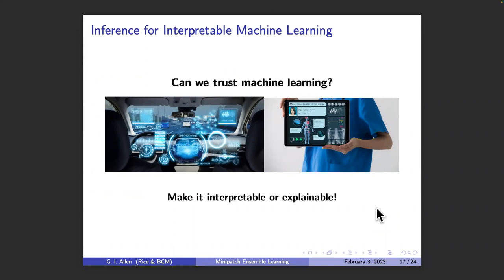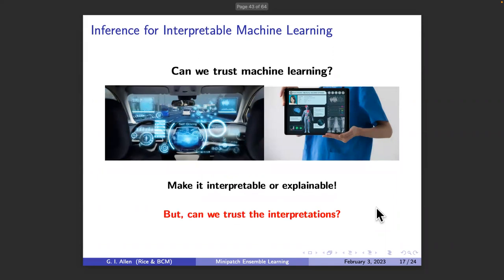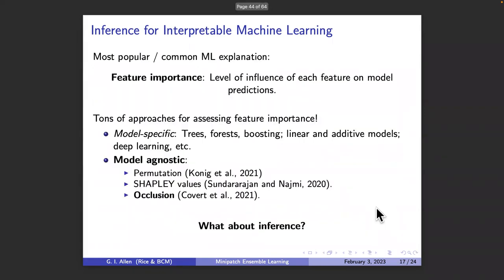Machine learning is used everywhere these days — in cars, electronic health records, and many high-stakes applications. Everybody says we need to make machine learning results interpretable or explainable to humans. But I want to ask: sure, we can get interpretations from machine learning, but can we really trust those interpretations?